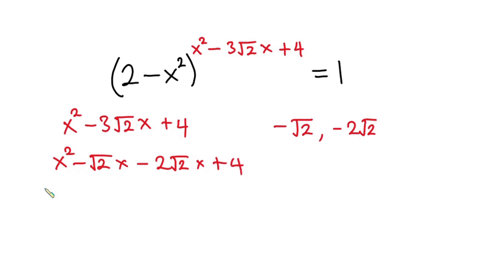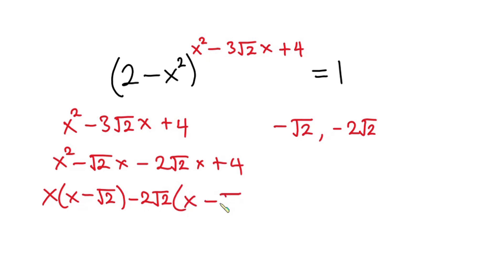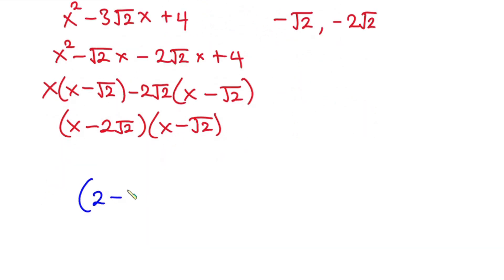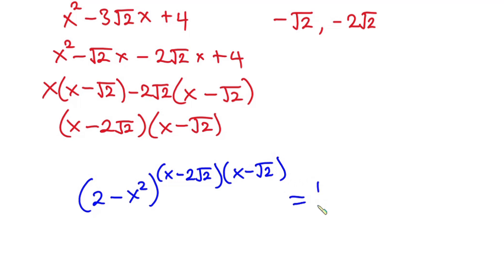From the first two terms I'm going to take x as a common factor, giving x(x minus √2). Then from the last two terms I take out negative 2√2, giving negative 2√2(x minus √2). So the factored form is (x minus 2√2)(x minus √2). So the original equation becomes (2 minus x²) to the power (x minus 2√2)(x minus √2) equals 1.